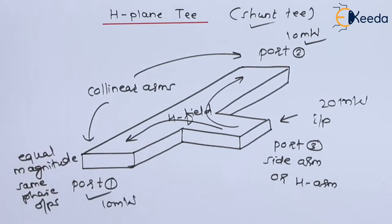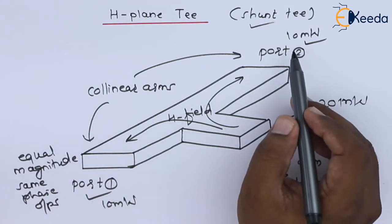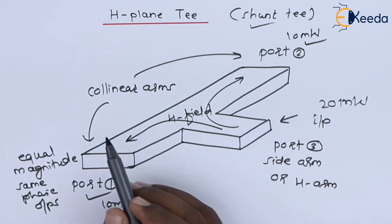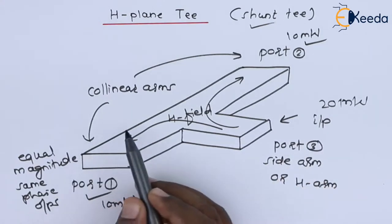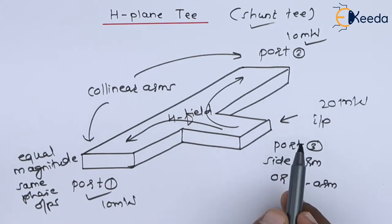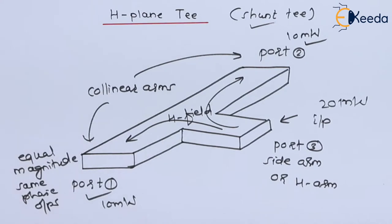On the other hand, if you operate the H-plane T with two equal inputs at port number 1 and port number 2, they will get added. Even with two unequal inputs there will be addition, and the added output power will be available at port number 3. So we call H-plane T as exhibiting the additive property.